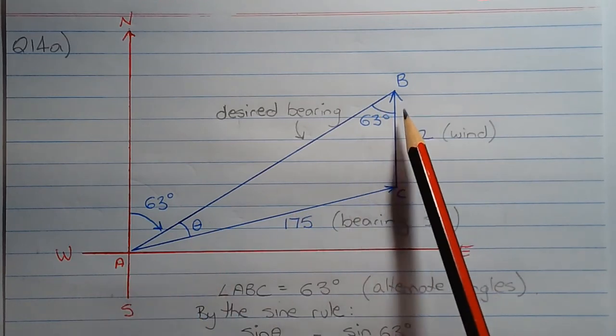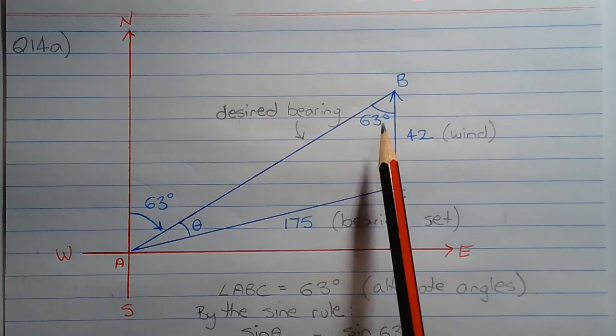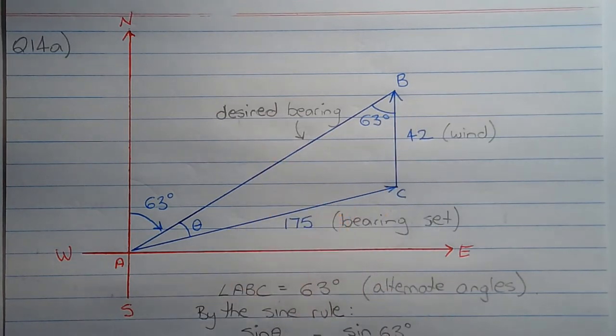Now angle ABC is equal to 63 degrees. So we need another angle inside this triangle in order to either apply the cosine rule or the sine rule in order to be able to determine angle theta.